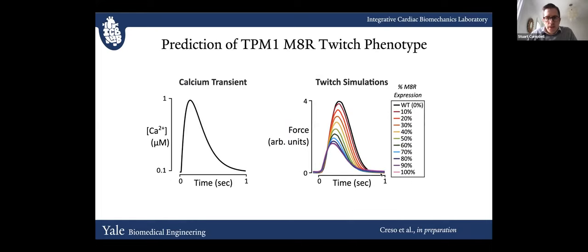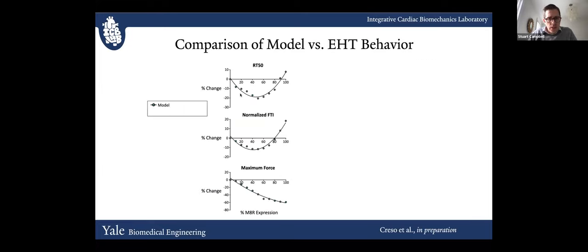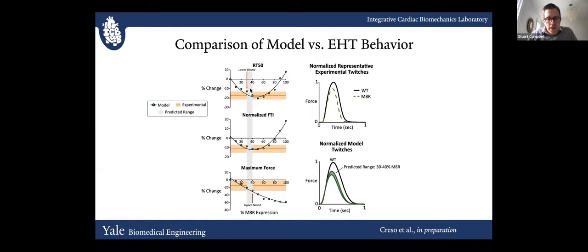To get quantitative agreement, we ran the model for many different expression levels, since we couldn't be absolutely certain of the precise expression level in experiments. We noticed that the area under the curve, relaxation time, and peak force were all co-varying. So we asked whether there was an assumed M8R expression level that simultaneously matches the measured changes in peak force, normalized force-time integral, and RT50. We found an upper bound of M8R expression at about 40% and a lower bound based on RT50 at about 30%, which is reasonable based on the protein expression evidence we have.